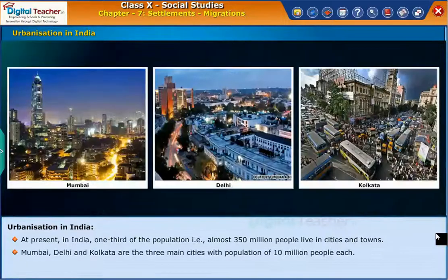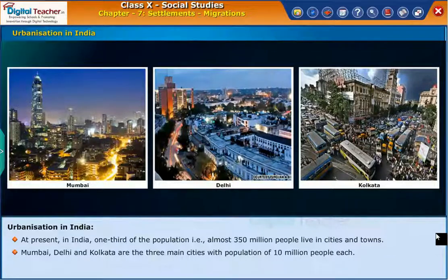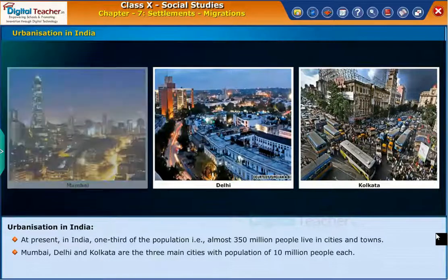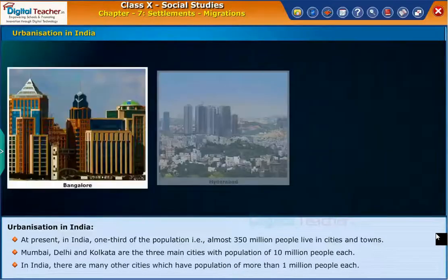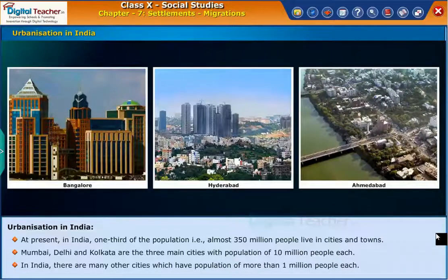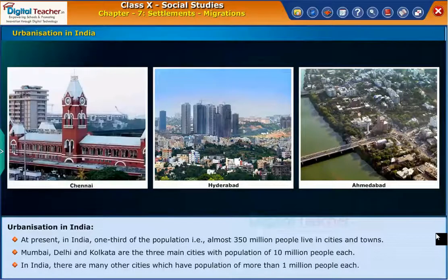Mumbai, Delhi, and Kolkata are the three main cities with a population of 10 million people each. In India, there are many other cities which have a population of more than 1 million people each.